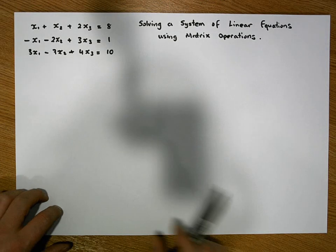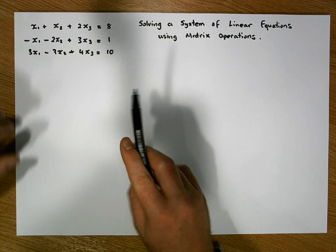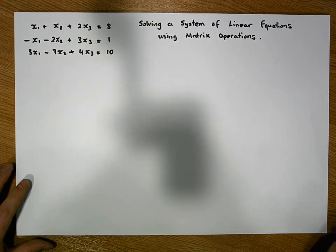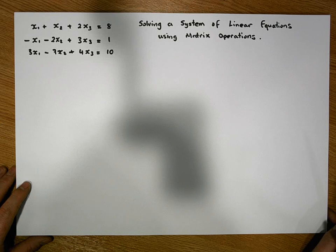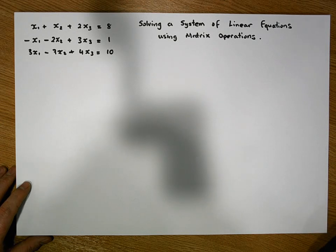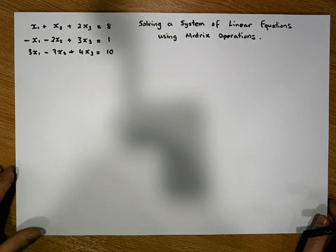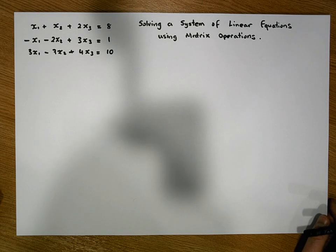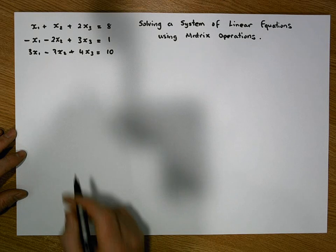We're looking to solve this system of linear equations. Keep in mind that systems of linear equations don't necessarily have a specific solution — there can be one solution, no solution, or an infinite number of solutions. In this particular case, we do know that we get a unique solution set.